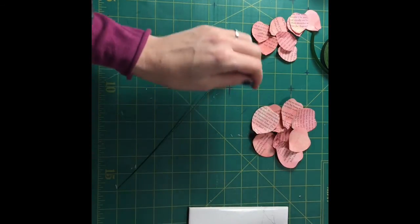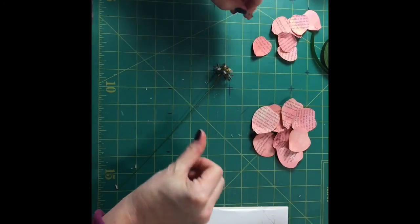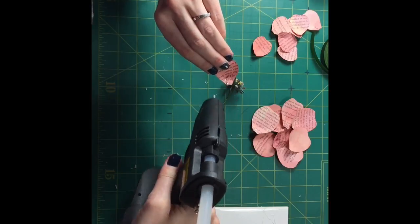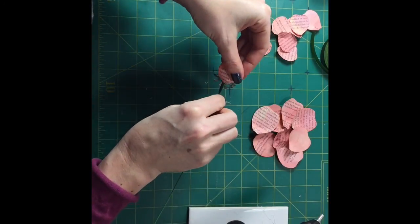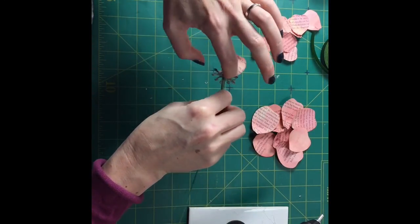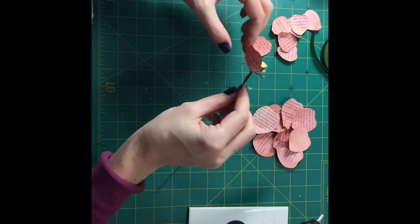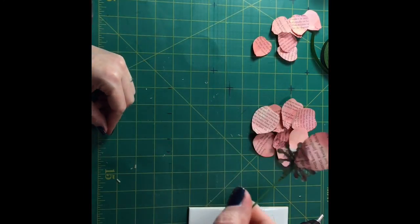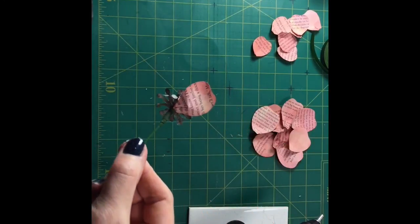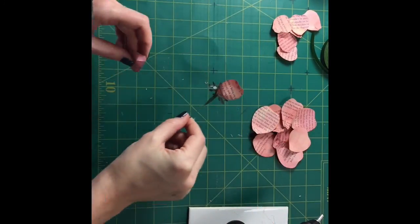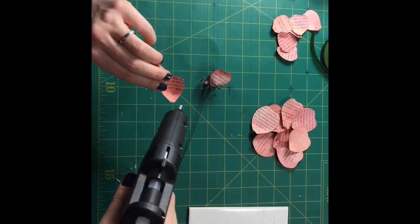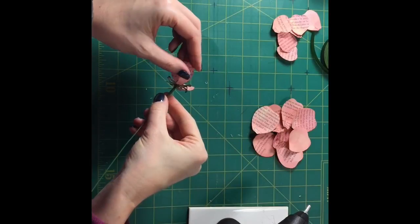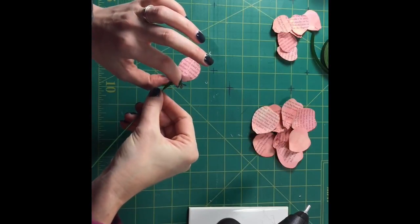And now it's time to start gluing on our first small petals. So a little bit of glue onto the petal and onto the bottom of your flower stems there just like that. Okay and then the next one, a little bit of glue and we put it right there on the opposite side.